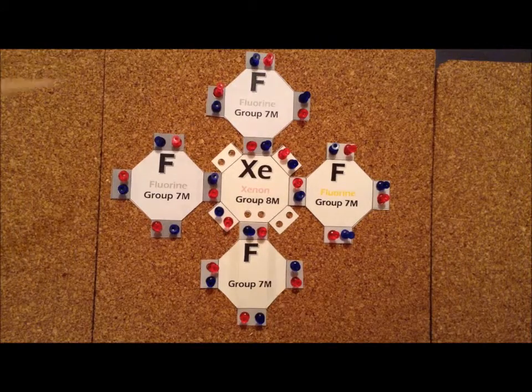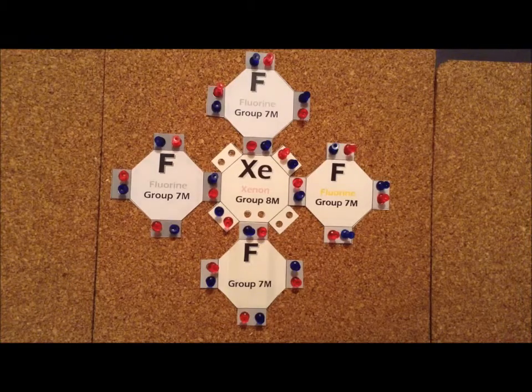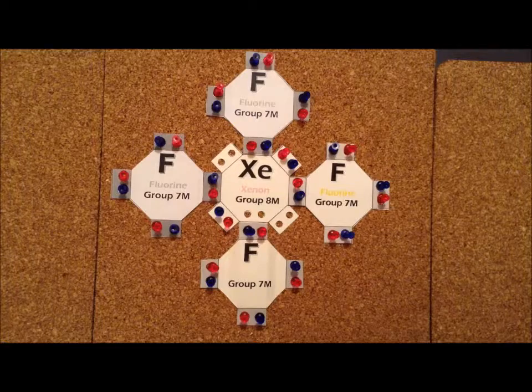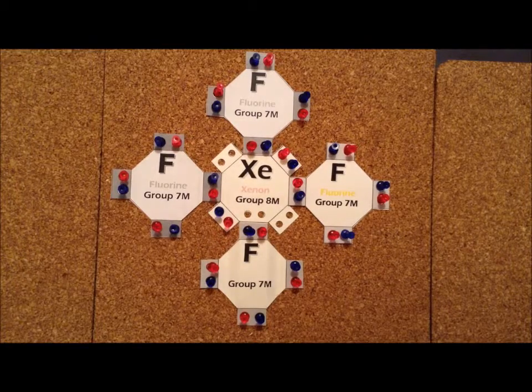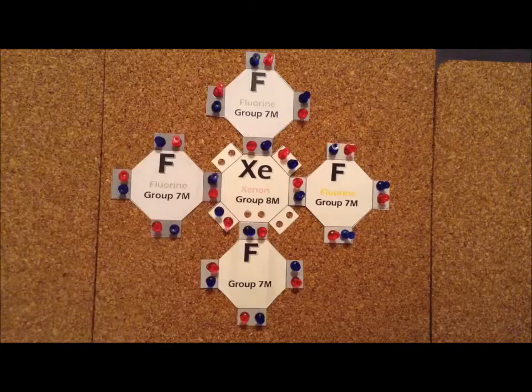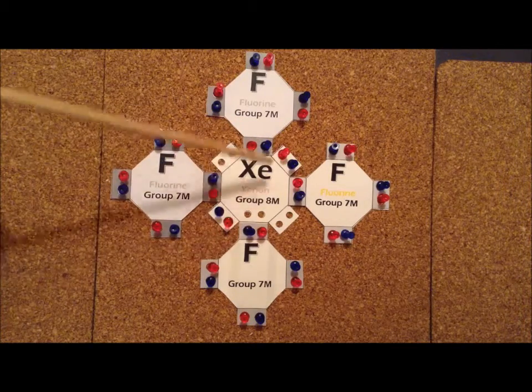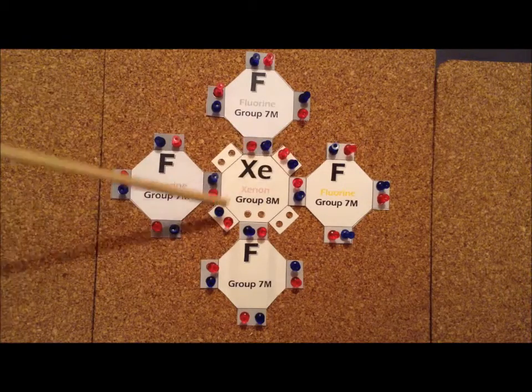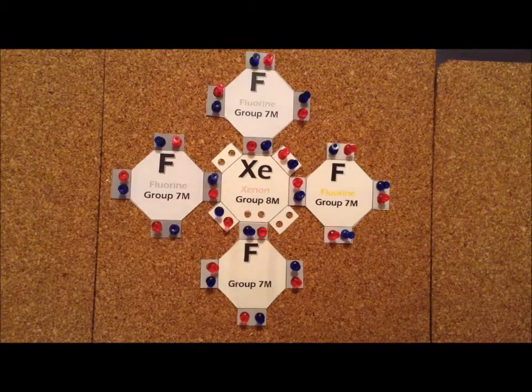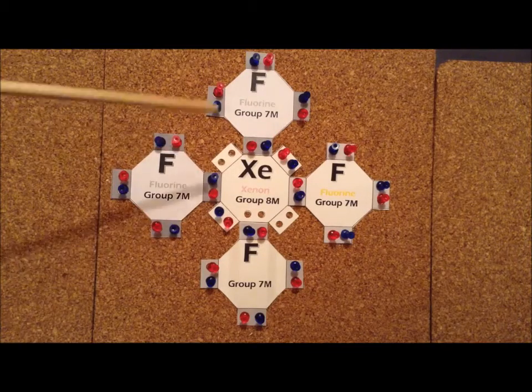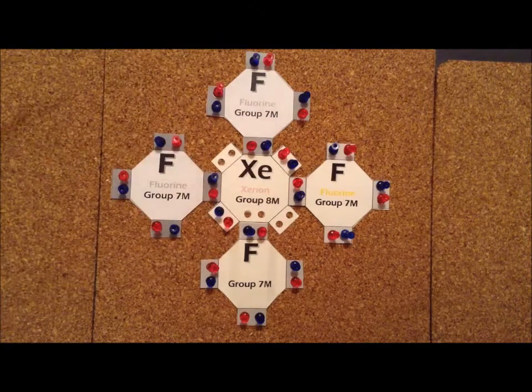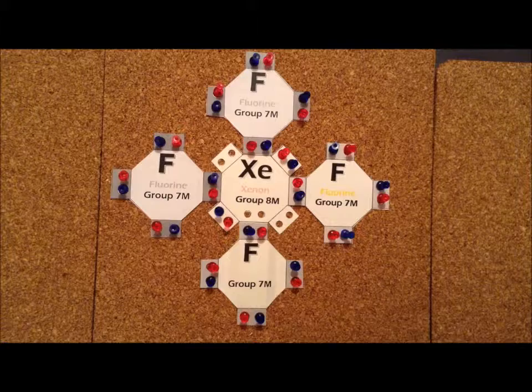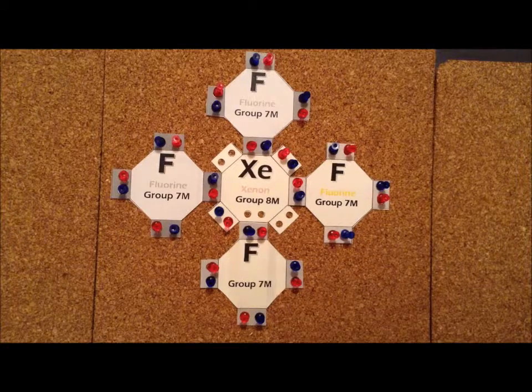As a shortcut, we notice that we have to satisfy the octet rule for each of the fluorines. So for each of the fluorines, that uses up 32 electrons right away. So we know that we have, beyond that, four more electrons that we have to allocate. So we get eight electrons around xenon just from the four single bonds to fluorine. And then we have two more as lone pairs. And we can do that. We notice that we have a total of 12 electrons on the central xenon atom, which is allowed because xenon is in the third row or beyond. So that we're allowed to expand the octet.